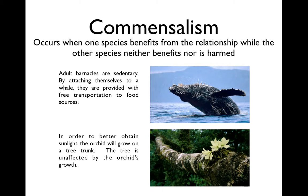Commensalism is when one species benefits but the other species is neither harmed nor benefited — it really doesn't make any difference. One example is barnacles: adult barnacles are sedentary, meaning they don't move. They attach themselves to a whale and are provided with food and free transportation to different food sources. The whale is not harmed by the presence of barnacles, but it also doesn't benefit. Another example: orchids will grow on tree trunks to obtain better sunlight. The tree is not affected by the orchid's growth, but the orchid definitely benefits.